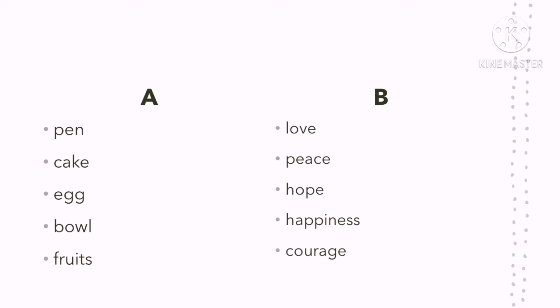Alright, so I have now here two groups of words. Let me read the words on Group A. We have here pen, cake, egg, bowl, and fruits.